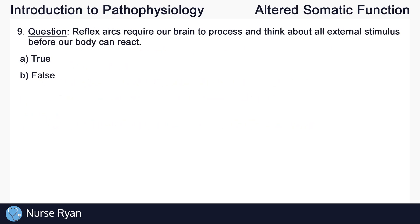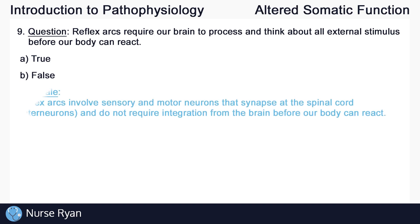Question number nine: reflex arcs require our brain to process and think about all external stimulus before our body can react. This one is B, false. Reflex arcs involve sensory and motor neurons that synapse at the spinal cord or interneurons, and do not require integration from the brain before our body can react. For example, if you touch something that's really hot by accident, you wouldn't want your brain to have to think about that — you want your hand to pull back immediately, and that is done through reflex arcs.